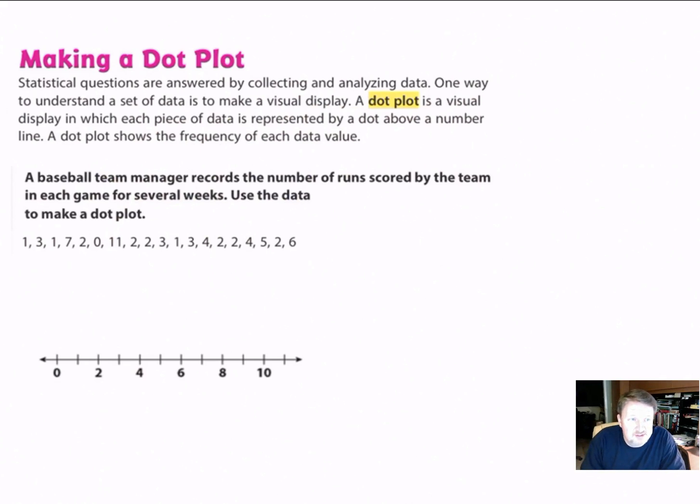So we have an example. It says a baseball team manager records the number of runs scored by the team in each game for several weeks. Use the data to make a dot plot. So all you do is, first of all, you have your data here, and you have your number line right here. So for each value of your data, you're just going to put a dot over the number line. So the first one, I have one. So I go up to one, and I put a dot, and I'm going to cross that one out. And then I have a three. So for three, I'm going to put a dot, cross that one out. I have a one again, cross that one out.